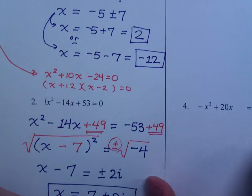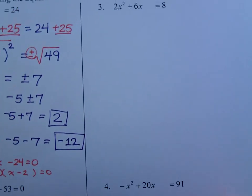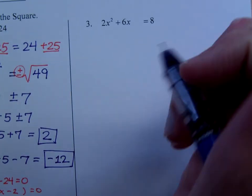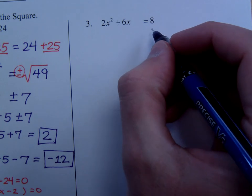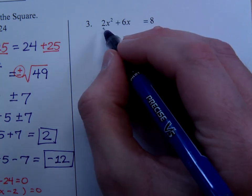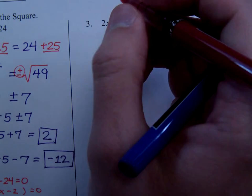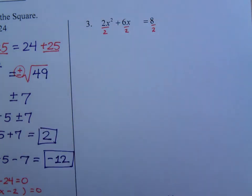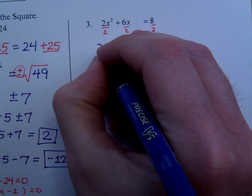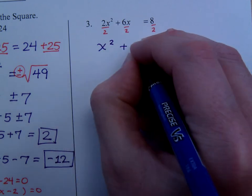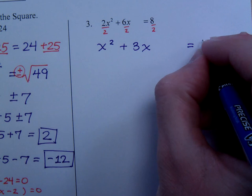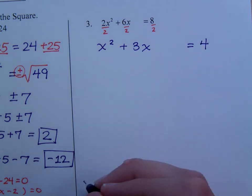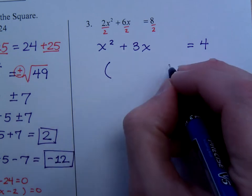All right, so, let's look here at number 3. In number 3, the constant is already on the other side, but this guy is not a 1. So, we fix that by dividing everything by the coefficient of x squared.